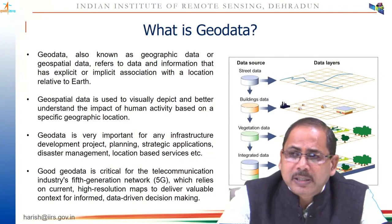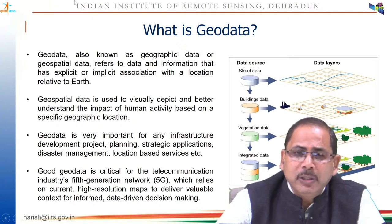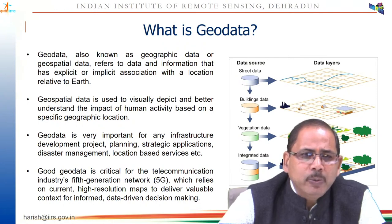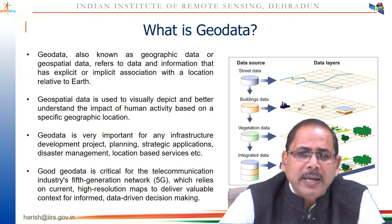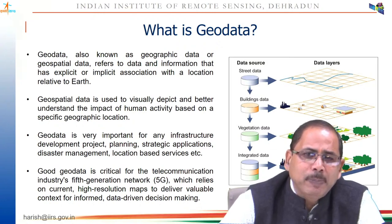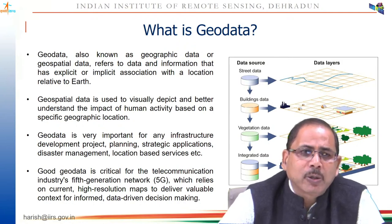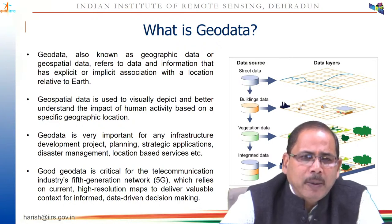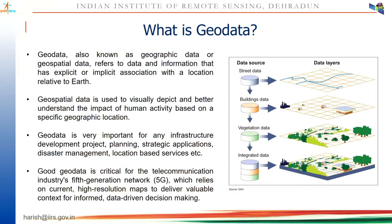Let us first understand what geodata is. The term combines 'geo' and 'data' — it is basically known as geographical data or geospatial data, which refers to data or information that has an explicit or implicit association with a location related to the earth. When any data or information relates to an object on the earth's surface and is represented in the form of coordinates or location information, it is called geodata. We use this data for visual representation to better understand the impact of human activities based on specific geographical locations.